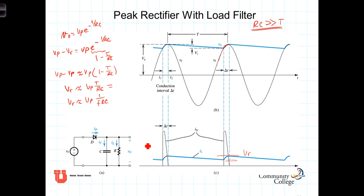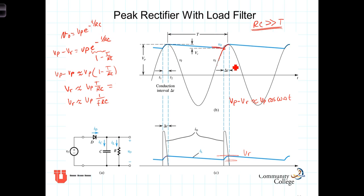Finally, we can deduce the amount of time the capacitor is charging during each cycle. Charging begins when the discharging capacitor voltage equals the rising source voltage. We can say that this voltage, V sub P minus V sub R, will equal the voltage rising on the source, which is approximately equal to V sub P times cosine of omega delta T. The source voltage at the time the two intersect is just the value of this expression at T equals delta T, and it continues for delta T seconds.